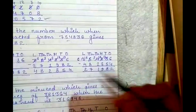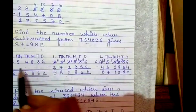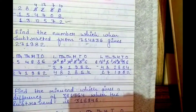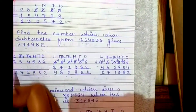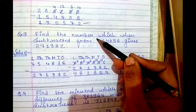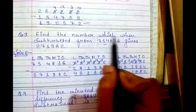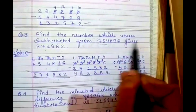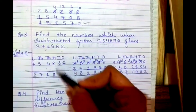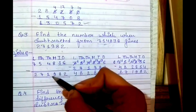Third step में मैंने proof किया है कि जो मैं answer लाई हूँ वो सही है। As it is number write किया, जो यहाँ answer find करना था वो as it is यहाँ लिखा, और answer ये वाला number आया। That means यदि आपको subtrahend find करना है तो minuend में से difference को minus करना है। बस आपको question देखकर समझ आना चाहिए कि find क्या करना है।